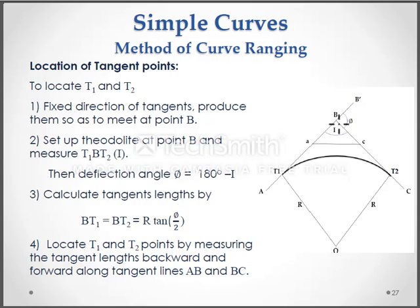Next point. Set up the theodolite at point B and measure t1, b, t2 and measure this interior angle. The deflection angle pi is equal to 180 degree minus i. Then we are getting this angle pi.